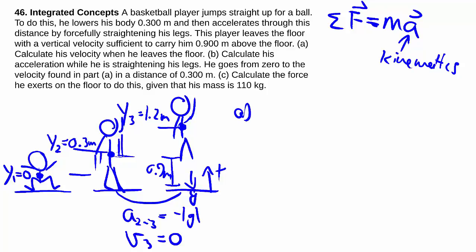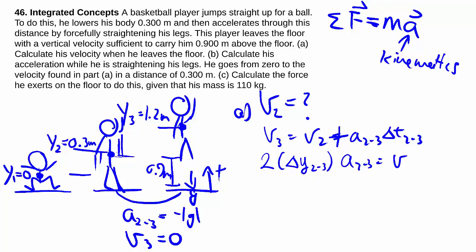In part a, they're asking us to calculate the velocity when he leaves the floor. When he leaves the floor, that for us is time 2. So they want that. Since we know the acceleration between time 2 and 3, and we know v3, we can make use of v3 equals v2 plus a2to3 times delta t2to3. Although we don't know the time, so let's use the other equation that doesn't involve the time, which is 2 delta y2to3 times a2to3 is equal to v3 squared minus v2 squared.